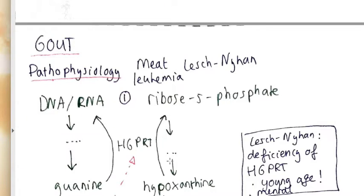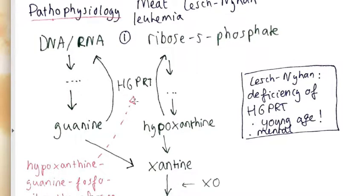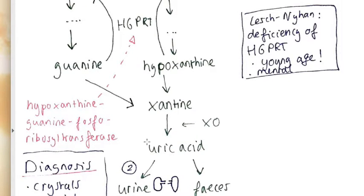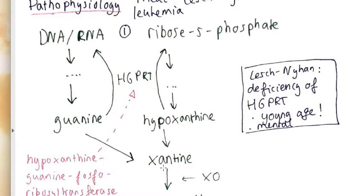Then the pathophysiology. So what we have over here, here we have uric acid. Uric acid can be formed out of xanthine by the enzyme xanthine oxidase, and that's like a breakdown product of something that is really common and we all know: it's DNA or RNA that's in our cells.